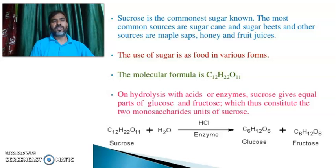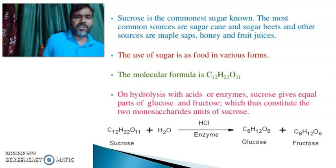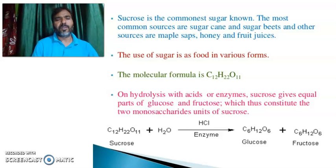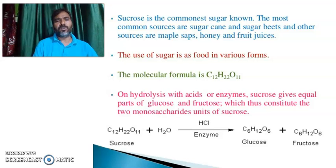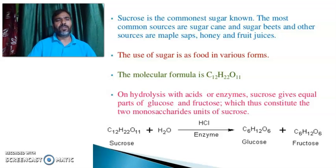The first step is molecular formula. The molecular formula of Sucrose is C12H22O11. On hydrolysis with acid or enzymes, Sucrose gives equal parts of glucose and fructose, which thus constitutes the two monosaccharide units of Sucrose. Sucrose plus water gives glucose and fructose.